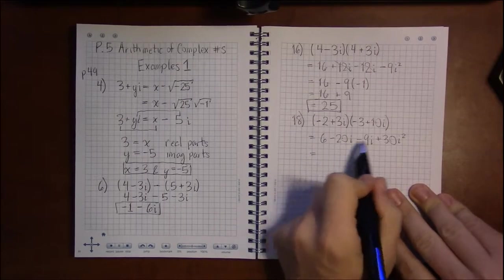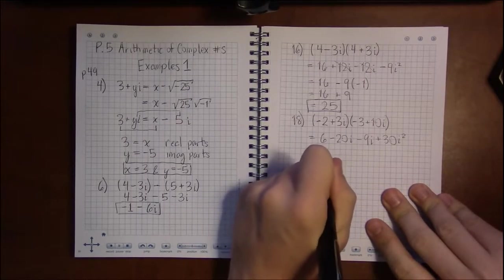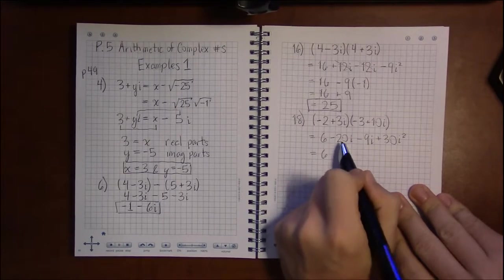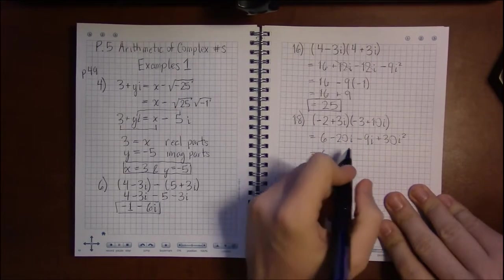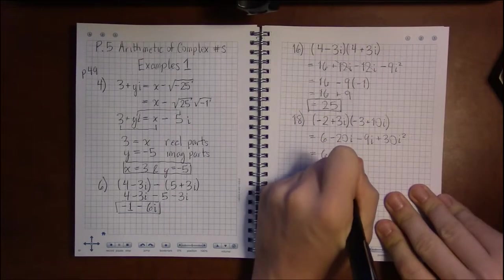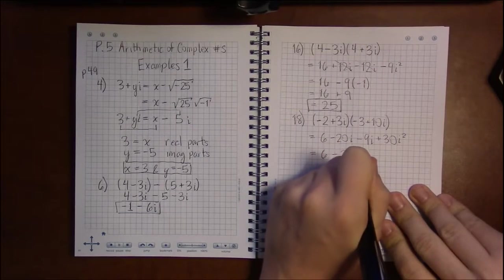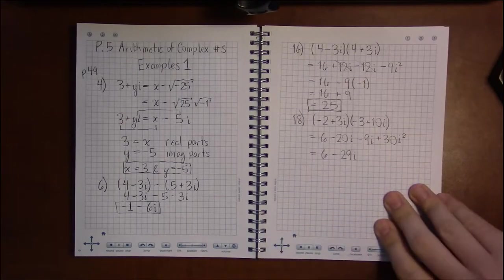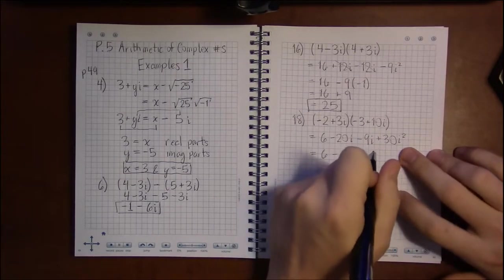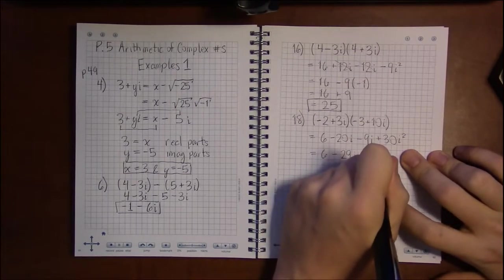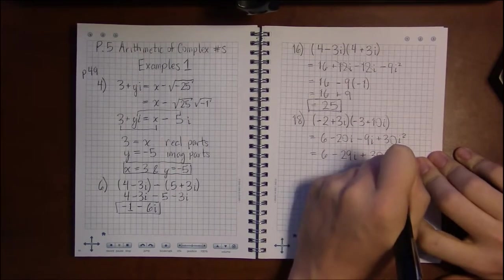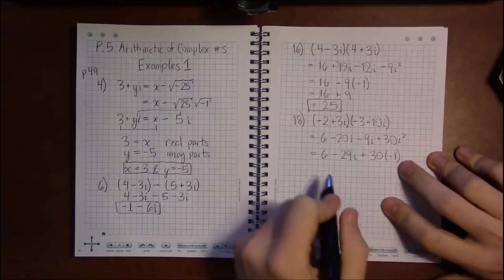Well, can't combine the 6 with anything at the moment. I can combine minus 20i and minus 9i—those are like terms, and that's going to combine to be minus 29i. Now, 30 i squared, as we've been hammering this whole time, i squared is minus 1.